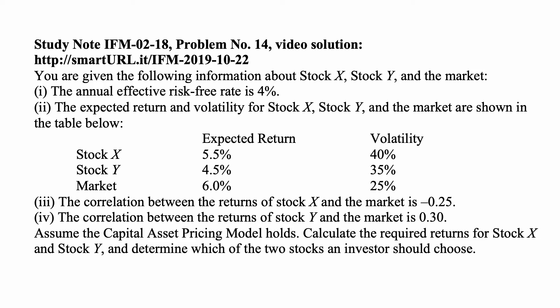Here is the problem for today for exam IFM. You are given the following information about Stock X, Stock Y, and the market. The annual effective risk-free rate is 4%. The expected return and volatility for Stock X are 5.5% and 40%, for Stock Y are 4.5% and 35%, and for the market the expected return is 6% and volatility is 25%.